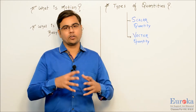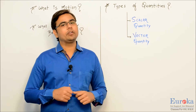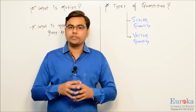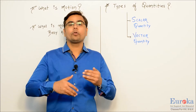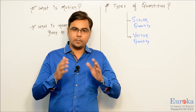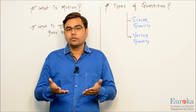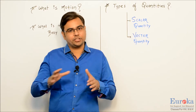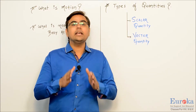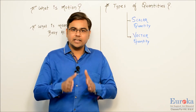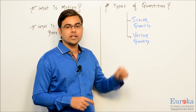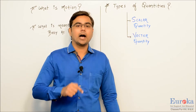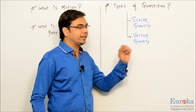So what is the meaning of scalar and vector quantity? Any quantity we talk about will always have a magnitude — the value of that thing — and along with that it may or may not have a direction. So any quantity has two components: magnitude, which means value, and direction. If a quantity has only magnitude and no direction, it is a scalar quantity. A quantity that has magnitude as well as direction is called a vector quantity.